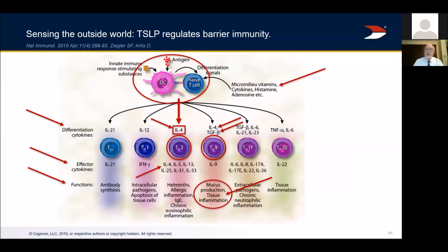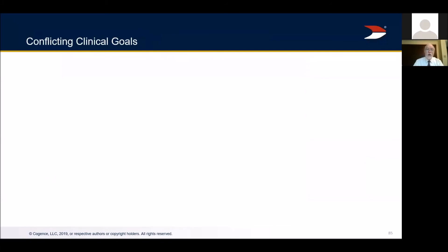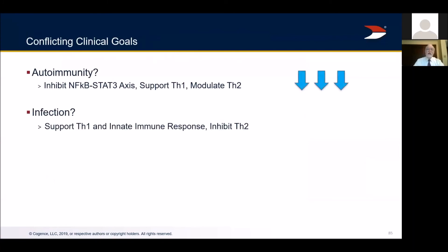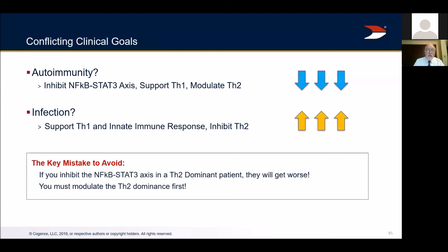So what you have to do first is downregulate TH2 so they don't have so much interleukin-4. Then you can promote immune tolerance as step two, not step one, to avoid driving excessive tissue inflammation. If they're autoimmune, inhibit the NF-κB/STAT-3 axis, support TH1 and modulate TH2. If they're infected, support TH1 and innate immune response and inhibit TH2. Avoid the key mistake of inhibiting NF-κB/STAT-3 and promoting tolerance in a TH2-dominant patient — downregulate TH2 dominance first.